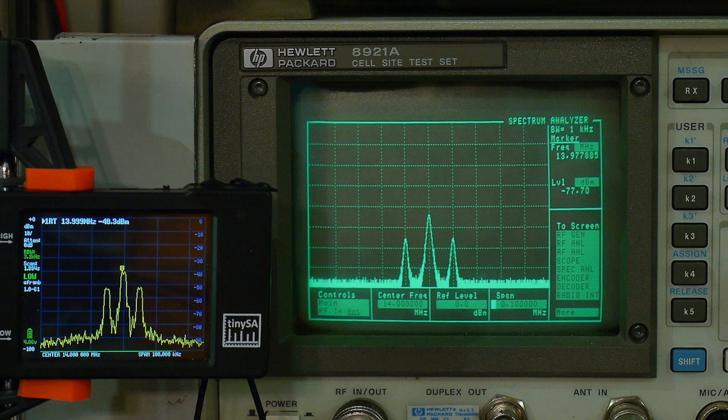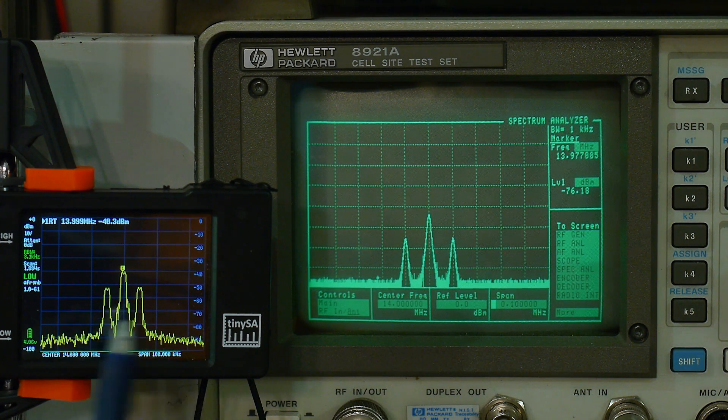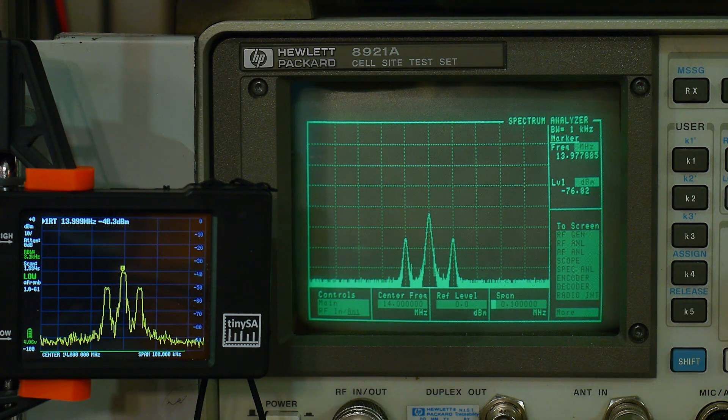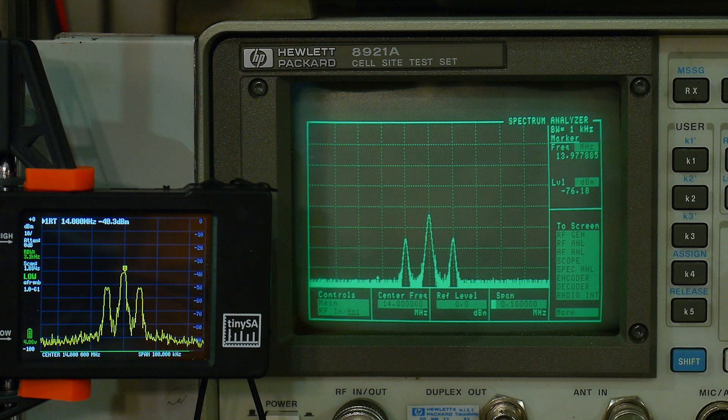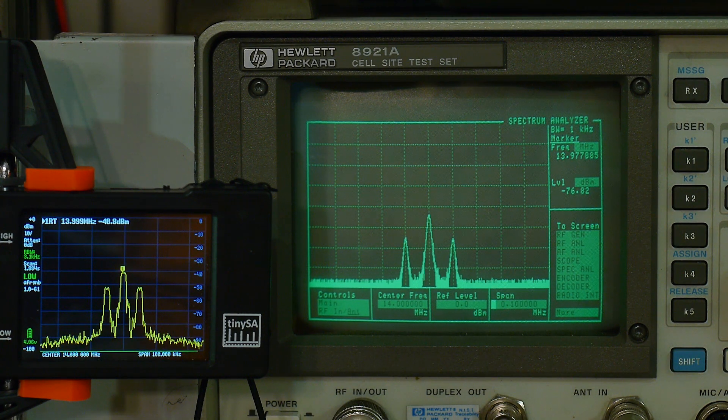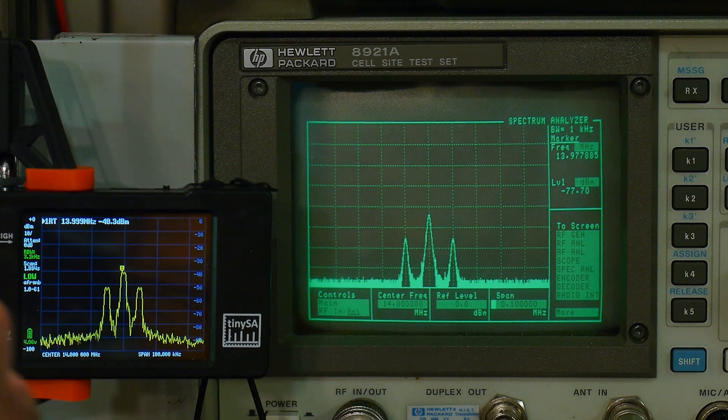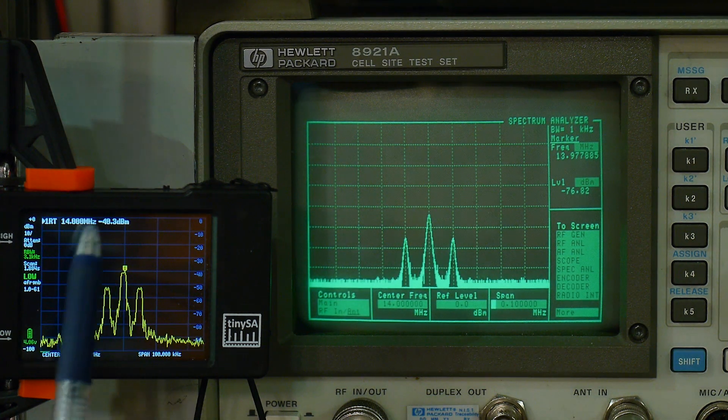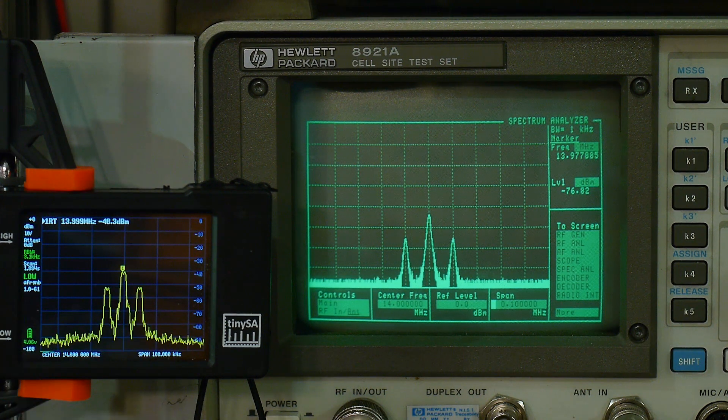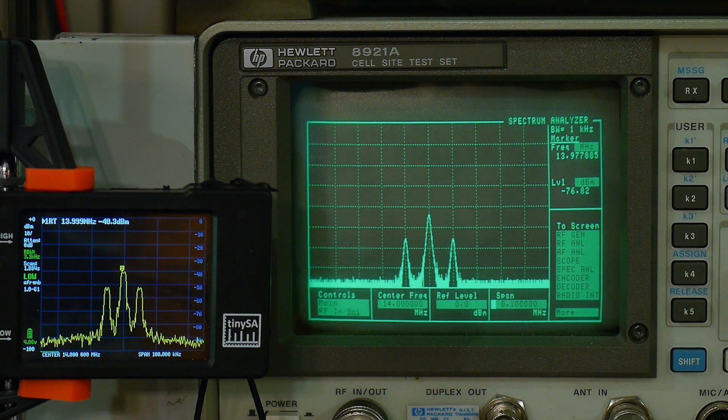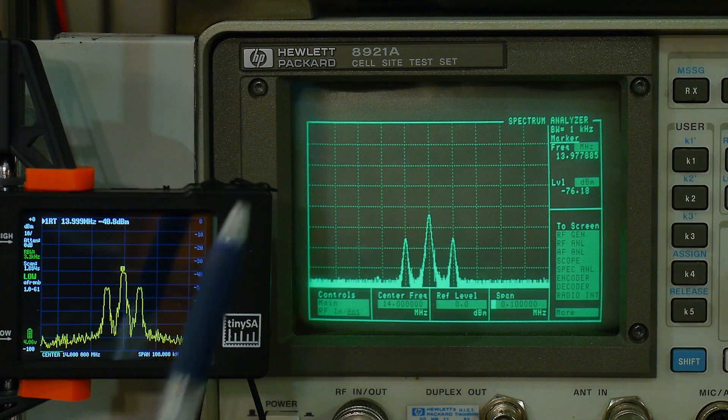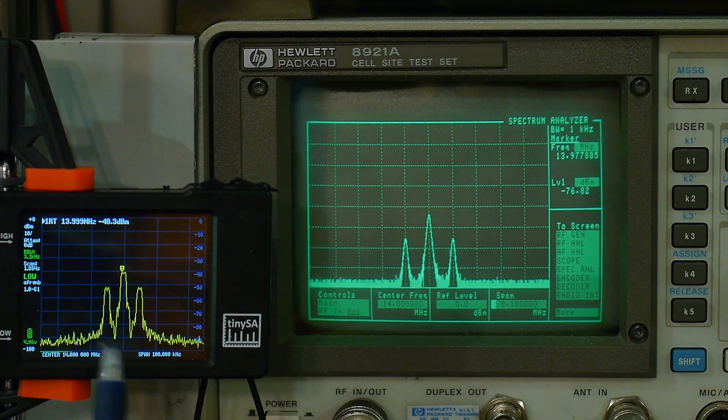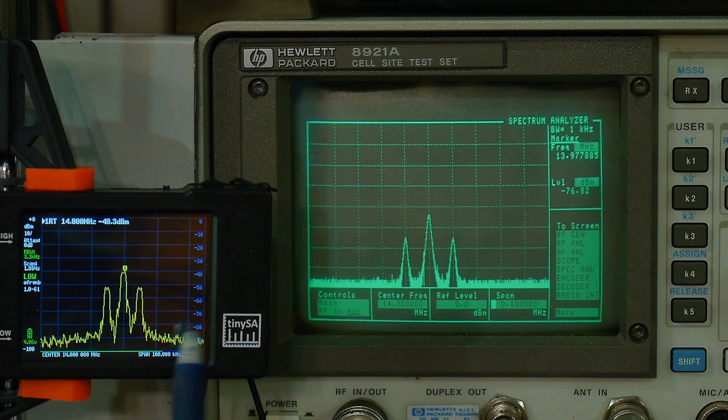So yesterday I showed that when you went to look at carriers, it wasn't doing a very good job. And now I know that's because we were over modulating the mixer. So here I have a signal coming in at minus 40 dBm. So we're well below that minus 30 level. And I have a 14 MHz center, a 100 kHz span.